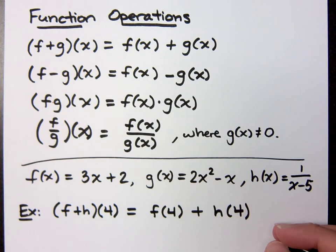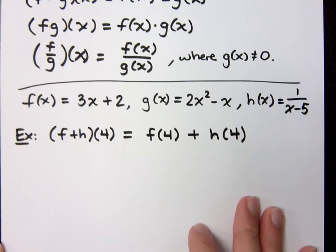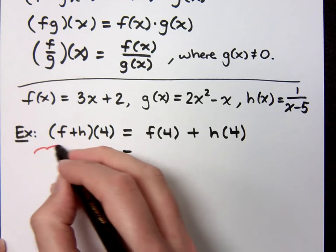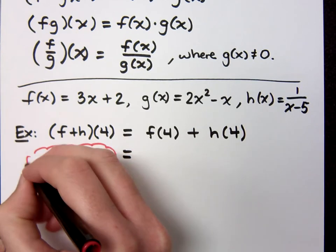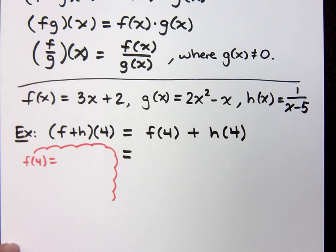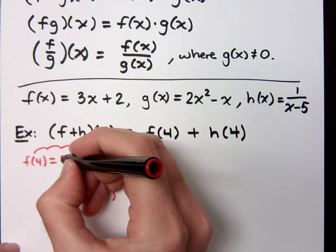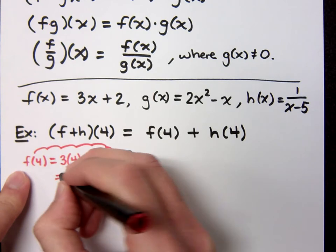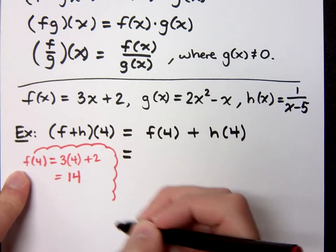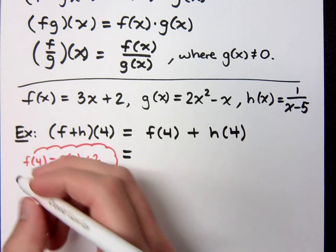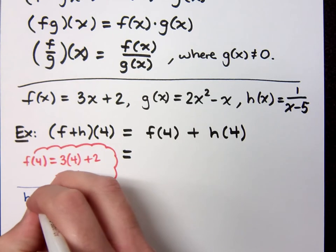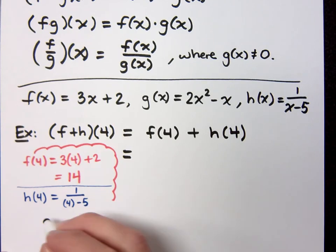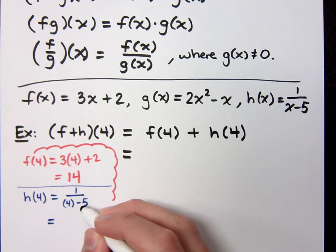I'm plugging in numbers and I'm evaluating. Now I just have to work out each of these. If I have f of 4, I plug it into the correct function f, so that means 3 times 4 plus 2, and what does that equal? That's 14. Now h of 4 means 1 over 4 minus 5. 4 minus 5 is negative 1, and 1 divided by negative 1 is?